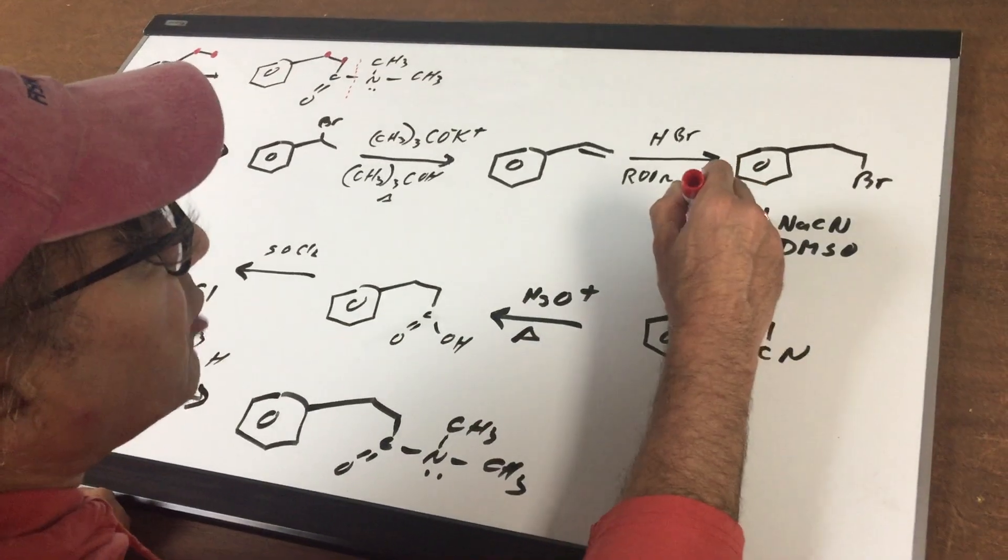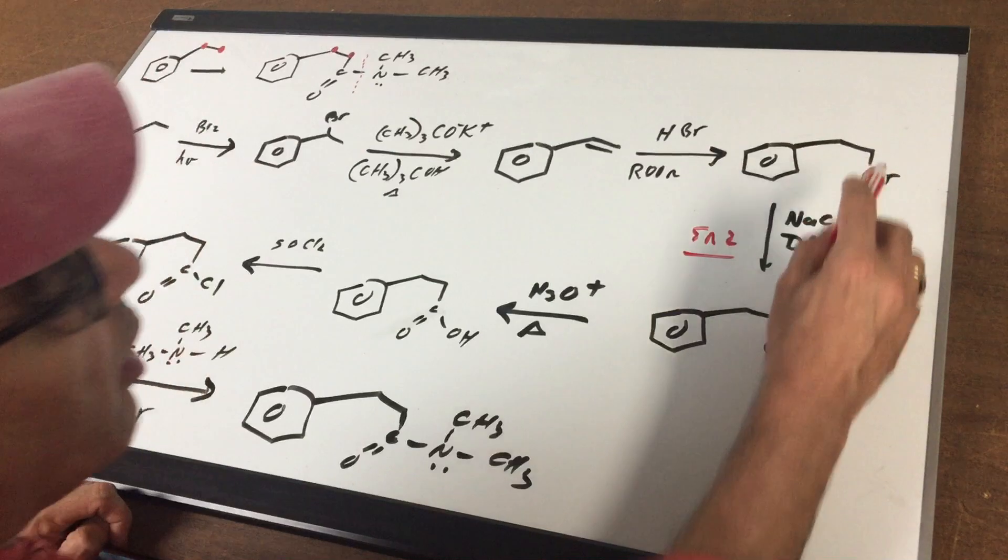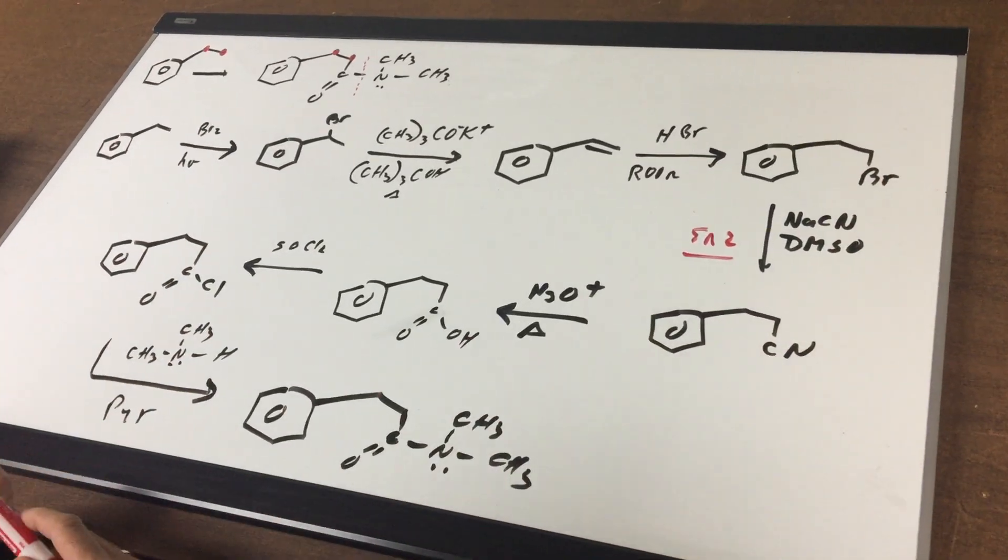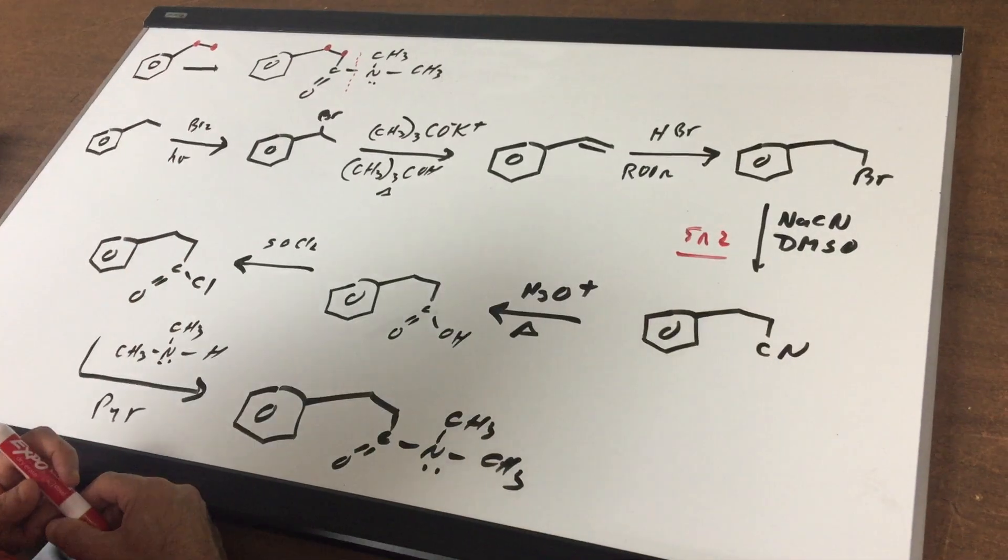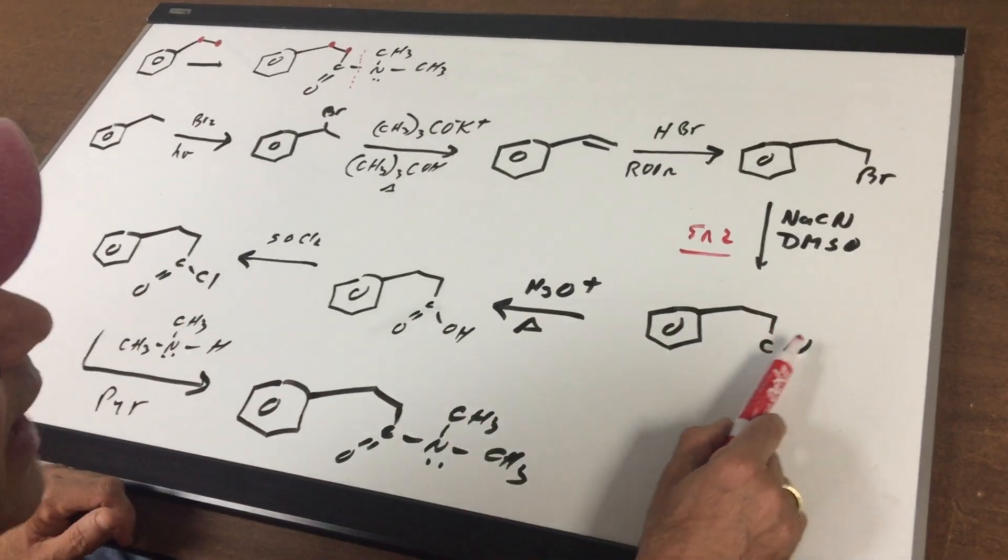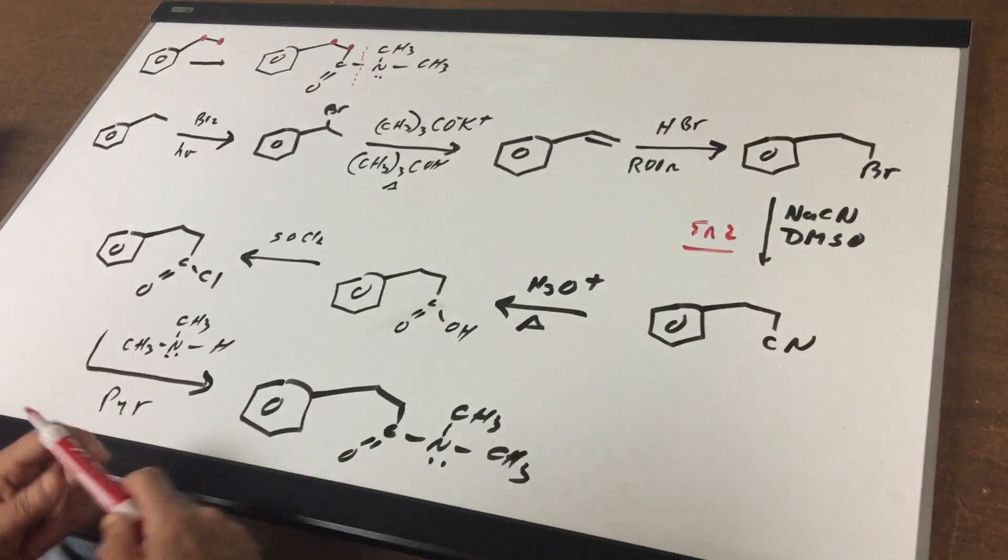Then, I'm going to do an SN2 reaction where I'm going to knock out the bromine and put in a cyanide. So, NaCN in DMSO, which is a polar aprotic solvent, knocks out the bromine and puts in the cyanide.